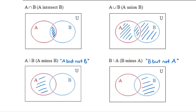This entire circle represents all elements in A. If we look at only the shaded region that is A but not B, we would read that as A minus B — the backward slash means minus. Likewise, the entire B circle represents all elements in B, and the shaded region that is B but not A is read as B minus A.